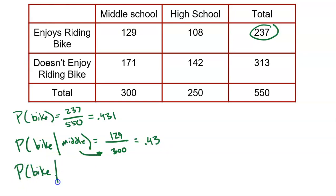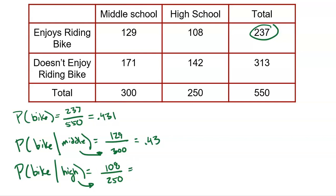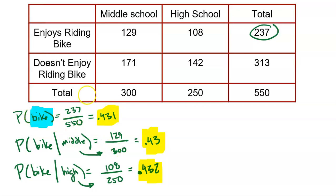We can also look at the high schoolers. Still focusing on riding a bike, we ask whether being in high school changes anything. The condition changes my denominator to the 250 kids in high school, of whom 108 enjoy riding their bike. 108 out of 250 is 0.432. They're not all exactly the same to the 18th decimal place, but they're all really close to each other, which shows that they are independent. The grade level does not dictate the likelihood that a student likes riding their bike. A lot of kids get this wrong when they flip the variables — putting middle school first and bike second changes what you're measuring and won't lead to the right answer.